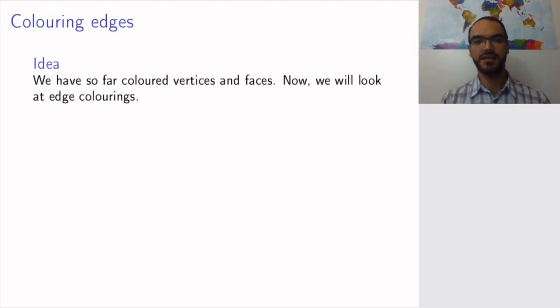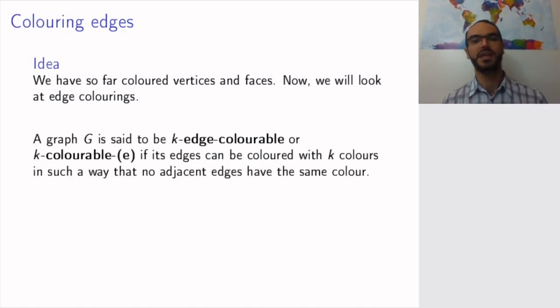The idea is simply that given a graph we want to color edges in different colors. The precise definition is that we call a graph K-edge-colorable or K-colorable(e) if its edges can be colored with K colors so that no adjacent edges have the same color. Remember for two edges being adjacent what it means is that they should attach, so to speak, to the same vertex.